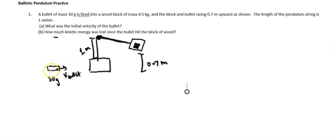So we have this 30-gram bullet right here that is fired into a wood block of mass 4.5 kilograms, and then the bullet and block stick together and swing upwards, as shown.